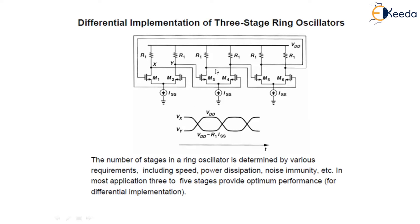We can have many stages in this ring oscillator — it can be four or five. The number of stages in a ring oscillator is determined by various requirements including speed, power dissipation, noise immunity, etc. In most applications, three to five stages provide optimum performance in the case of differential implementation. There is always a trade-off between the different parameters, so we can use three, four, or five stages depending upon the various requirements.